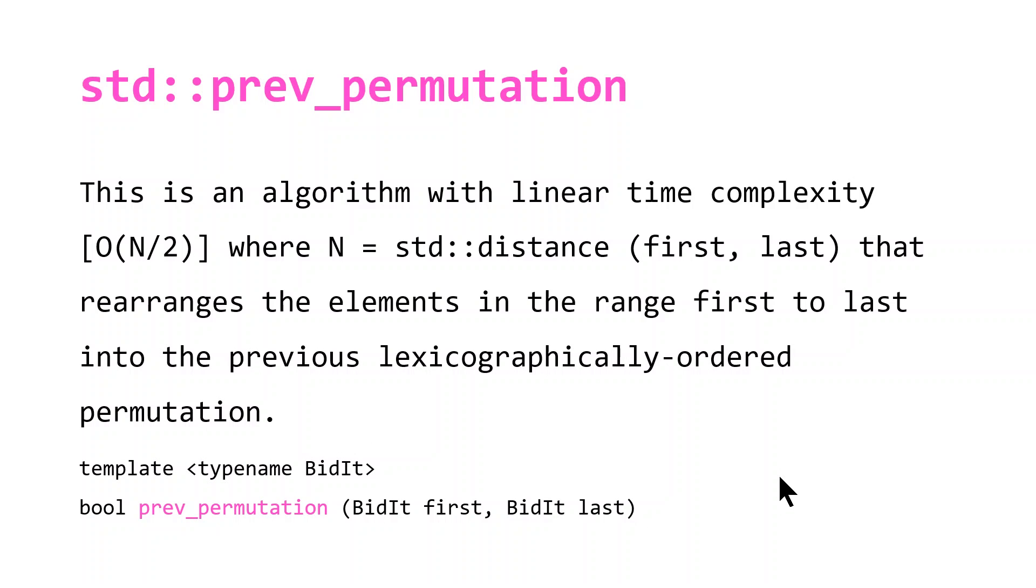For std::prev_permutation, we have the exact same thing except that our algorithm is rearranging the elements into the previous lexicographically ordered permutation. So let's take a look at a short and simple example.